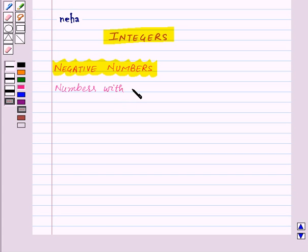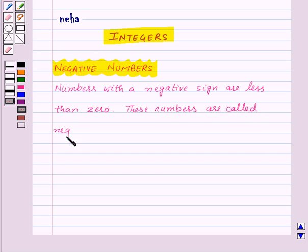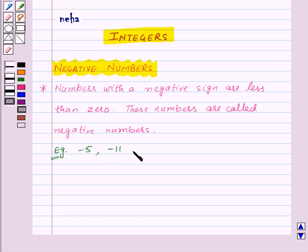Numbers with a negative sign are less than 0. These numbers are called negative numbers. For example, minus 5, minus 11, minus 15 are all negative numbers.